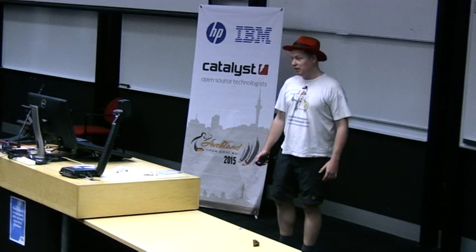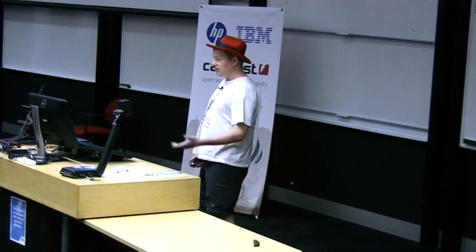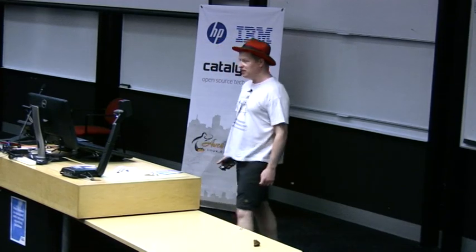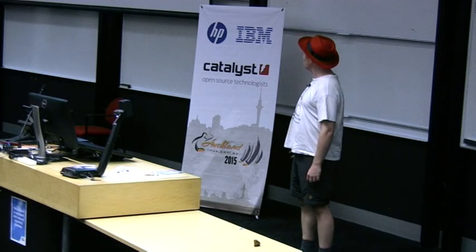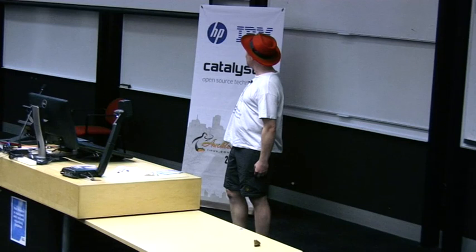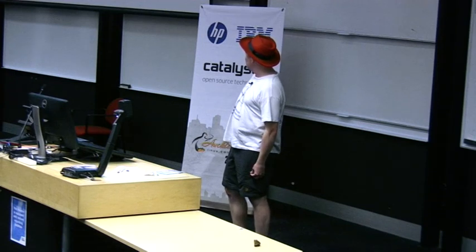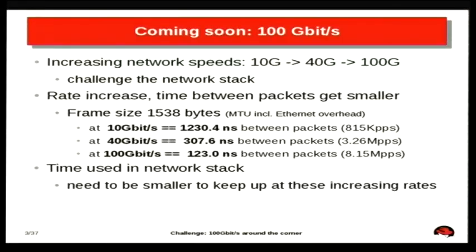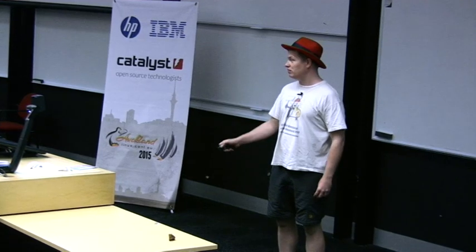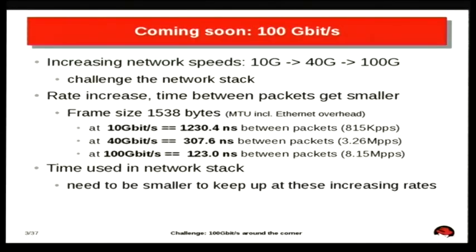If you take a full MTU size packet on Ethernet, you can see on 10 gigabits we still have some room to work with, but when we go up to 100 gigabits the time between packets arriving is only 123 nanoseconds. That's not a lot of work. The inter-packet gap is 38 bytes.